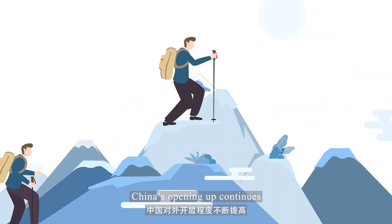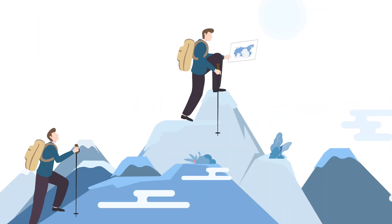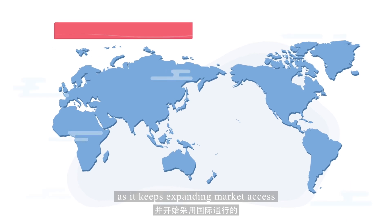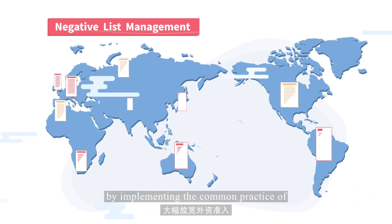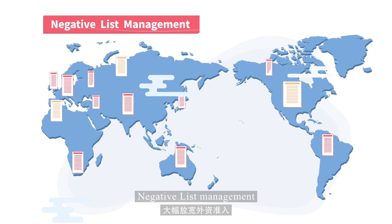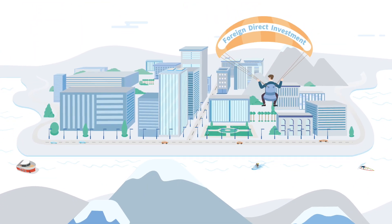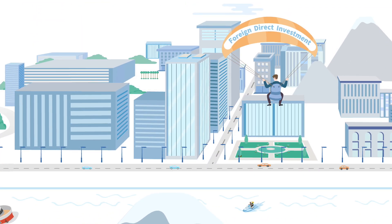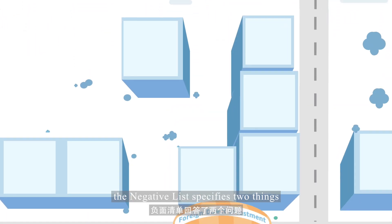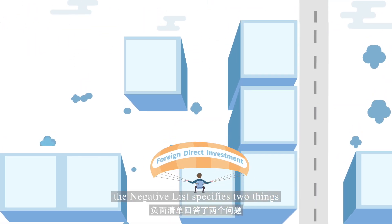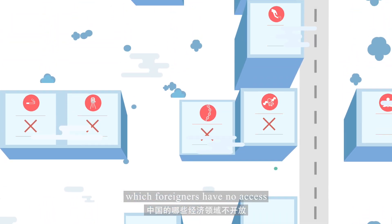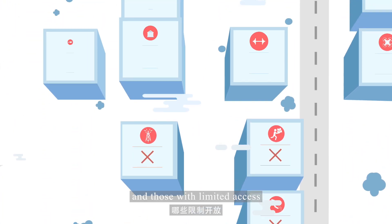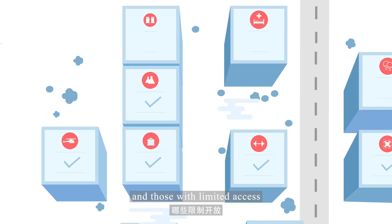China's opening up continues, as it keeps expanding market access for foreign investors by implementing the common practice of negative list management. Simply put, the negative list specifies two things: the Chinese sectors to which foreigners have no access, and those with limited access.